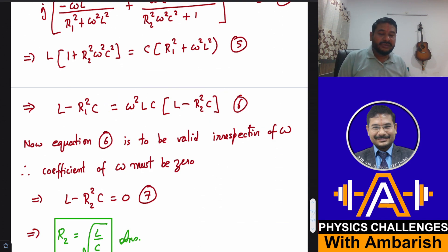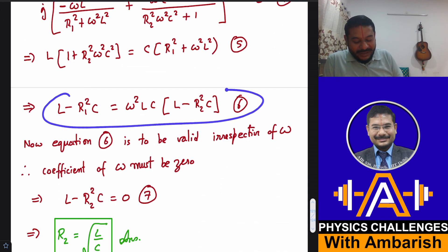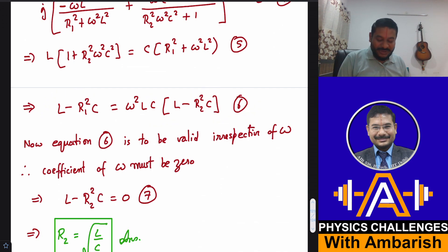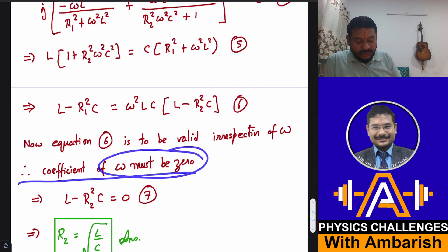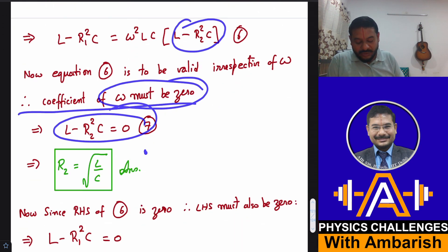So L minus R1 square C should be equal to omega square LC into L minus R2 square C. Just rearrangement of equation 5 and since you want this whole thing to be independent of omega, the only way that is possible is if the coefficient of omega becomes 0. So that means L minus R2 square C must be 0. So equation 6 is to be valid irrespective omega therefore coefficient of omega must be 0. So L minus R2 square C is 0. That gives you R2 is equal to under root of L by C.